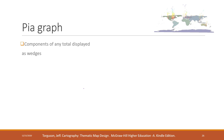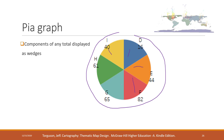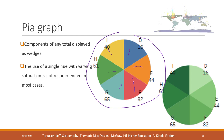A pie graph is a variation of the bar graph. Instead of using bars, we use a circle to represent the entire data set, and we use different colors to represent different parts or variables. When using a pie graph, avoid using a single color — instead, use different colors to represent different variables.